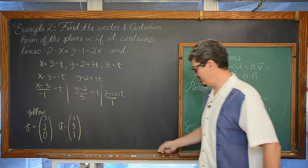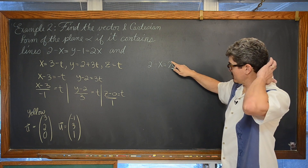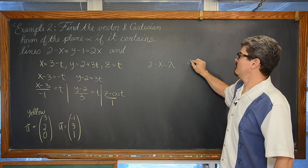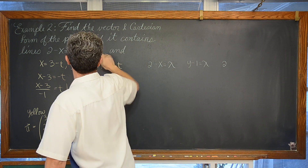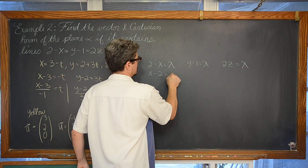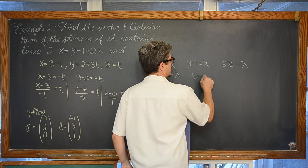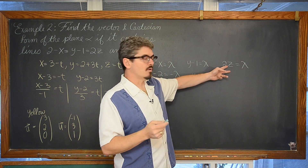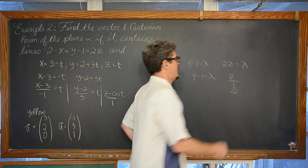Now let's repeat the same process for the green line. We have 2 minus x equals lambda, y minus 1 equals lambda, and 2z equals lambda. I want to rewrite 2 minus x as (x minus 2) over negative 1 — dividing both sides by negative 1. The y term gives (y minus 1) over 1 equals lambda. And rewriting 2z as z over one-half gives (z minus 0) over one-half equals lambda.